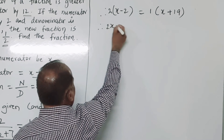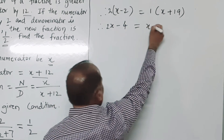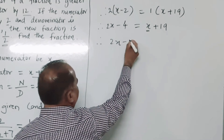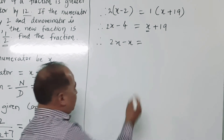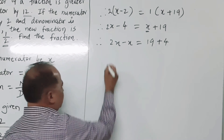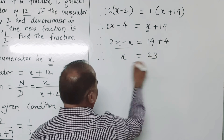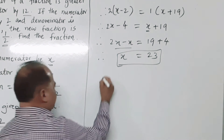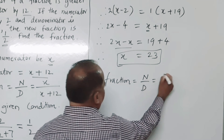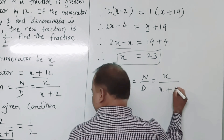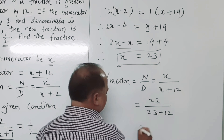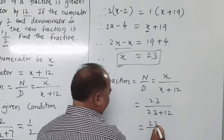Simplifying: 2x minus 4 equals x plus 19. Taking variables to the left side: 2x minus x equals 19 plus 4. Therefore x equals 23. So the required fraction is x upon (x + 12), which equals 23 upon 35.